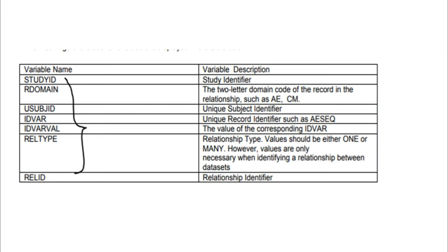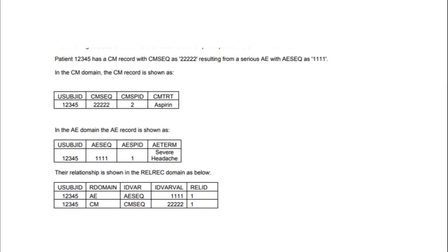As per the implementation guide in SDTM, the variables that should be contained in the RELREC dataset are: STUDYID, RDOMAIN, USUBJID, IDVAR, IDVARVAL, RELTYPE, and RELID. These are the variables that should be included in the RELREC dataset.